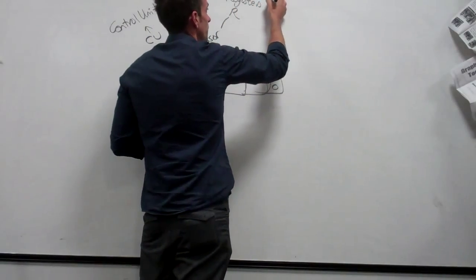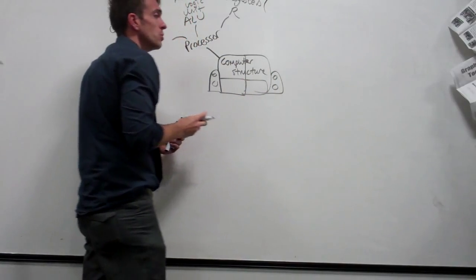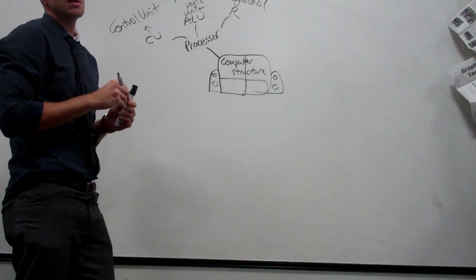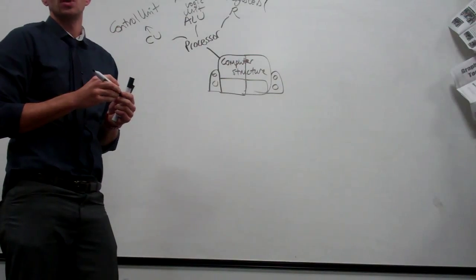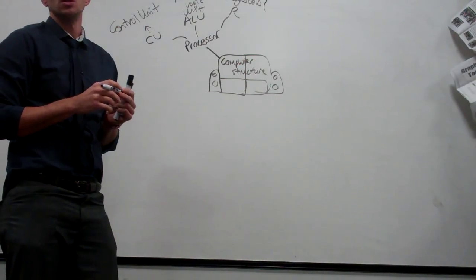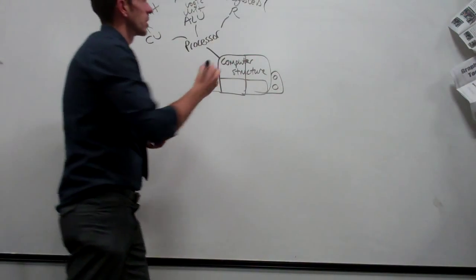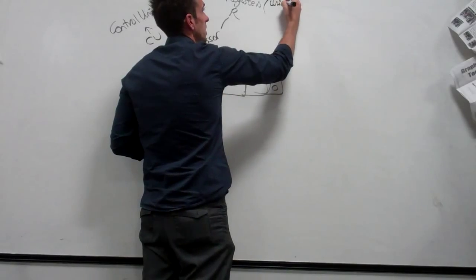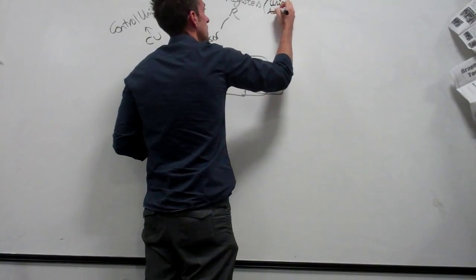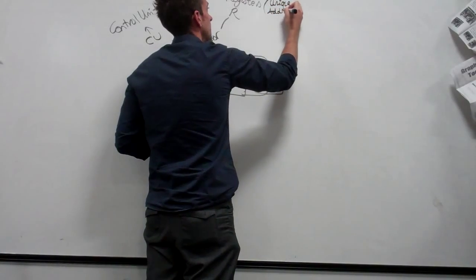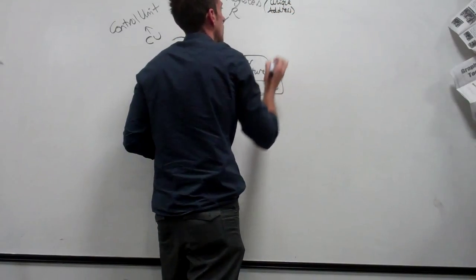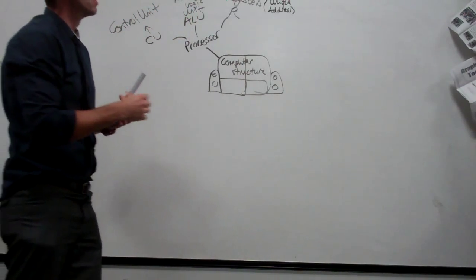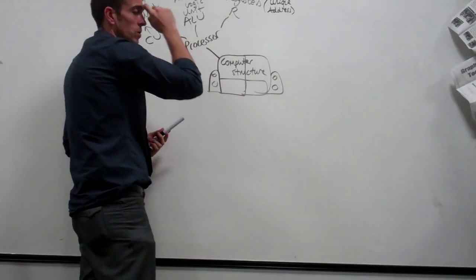How does the processor tell the difference between every individual location? It has its own unique address. Unique address — so unique addresses, and that's called addressability. Every individual location's got a unique address that can tell the difference.